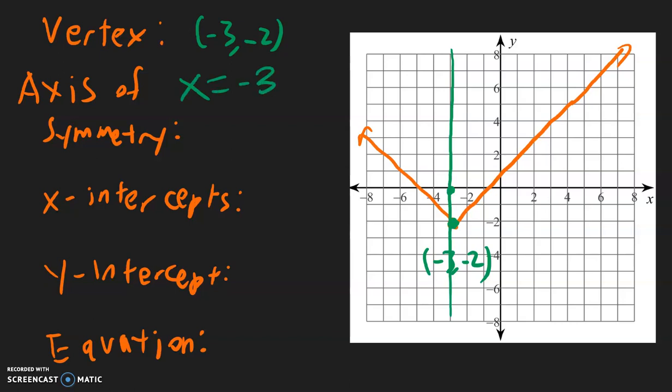For absolute value, all of the axes of symmetry will always be x equals. For the x-intercepts, it's where it crosses the x-axis. This one crosses two times, so it crosses at negative 1 and negative 5. The y-intercept — there's only one for this case, and it is positive 1.